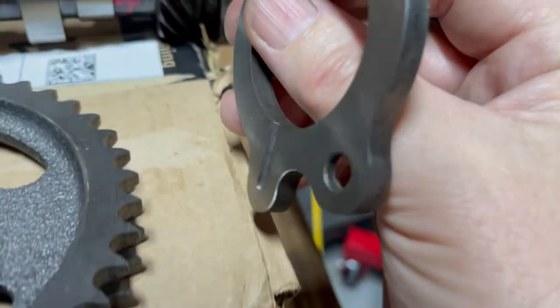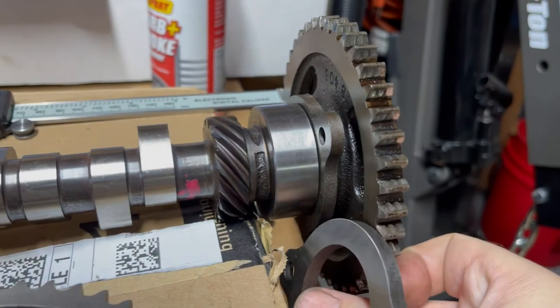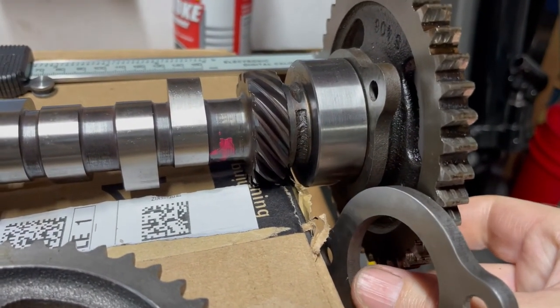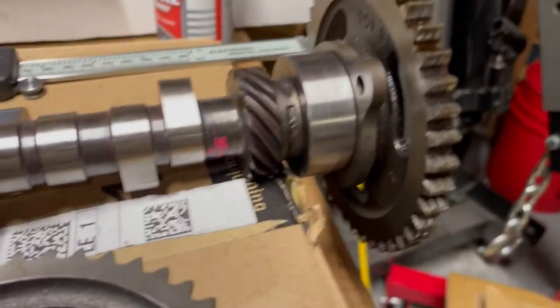When I put this on with my new sprocket and I measure my clearance, I get five thousandths, which is perfect. So just one more thing wrong with the old engine.